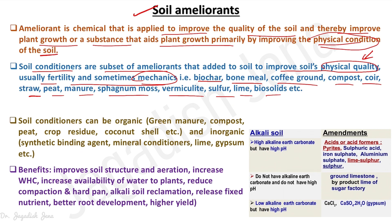Soil conditioners can broadly be organic — derived from plant and animal origin — such as green manure, compost, crop residue, and coconut coir. Then there are inorganic soil conditioners, meaning synthetic binding agents and mineral conditioners such as lime and gypsum, which are not derived from plant and animal origin. These soil conditioners act to improve soil physical properties, and side by side may also increase overall soil health and different qualities of the soil.